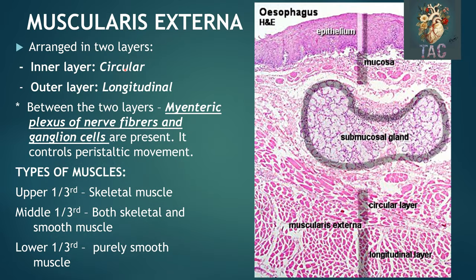Muscularis externa is arranged into two layers: the circular layer which is inner and the longitudinal layer which is outer. In this diagram you can appreciate the skeletal muscles — this part is taken from the upper part of the esophagus where skeletal muscles are present, and these are cross sections of the longitudinal layer of the muscularis externa. So different types of muscles: the upper third has skeletal muscle, the middle third has both skeletal and smooth muscles which are mixed, and the lower third has purely smooth muscle cells.